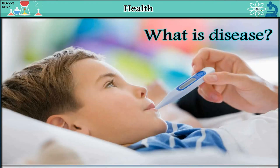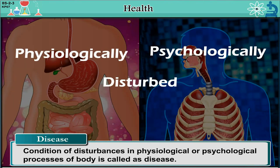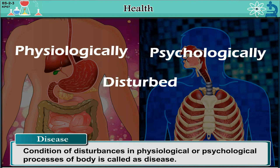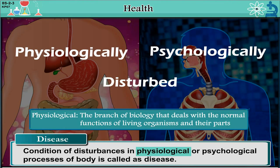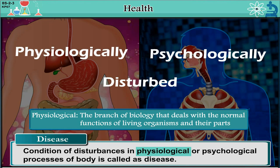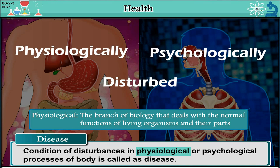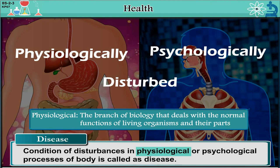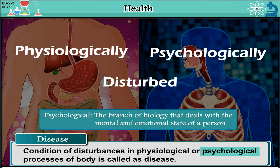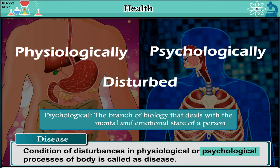What is disease? Conditions of disturbances in physiological or psychological processes of the body is called disease. Physiological is the branch of biology that deals with the normal functions of living organisms and their parts. Psychological is the branch of biology that deals with the mental and emotional state of a person.